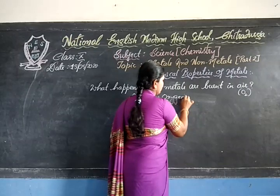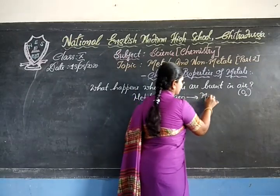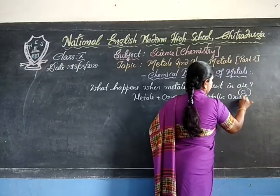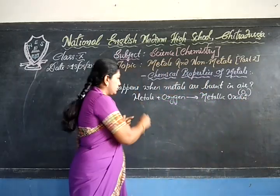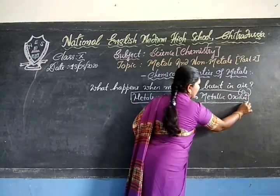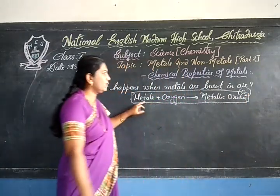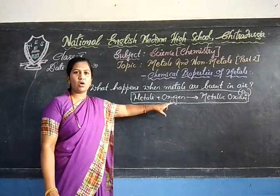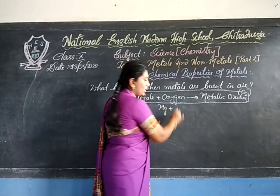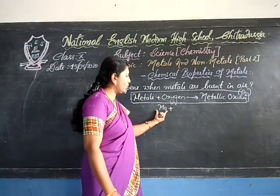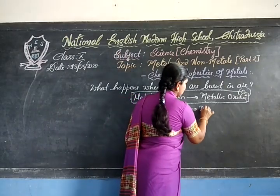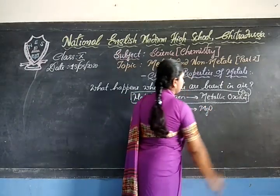This is the general formula we should remember: whenever metals react with oxygen, they form metallic oxide. Just now, one example I have shown you — that is magnesium. Magnesium, no doubt, is a metal. When this metal reacts with oxygen, it gives rise to magnesium oxide.